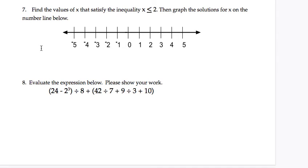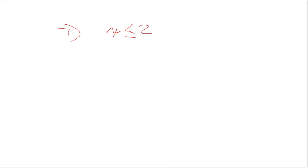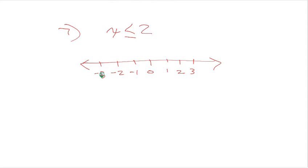Number 7 was: graph x is less than or equal to 2. On the number line, we have 0 in the middle, with 1, 2, 3 to the right and negative 1, negative 2, negative 3 to the left. A number of people put their dot on negative 2, but the dot needed to be on positive 2. Since it's less than or equal to, we use a closed dot. And since it's less than, we shade to the left. If your answer looked like that, you got it right.